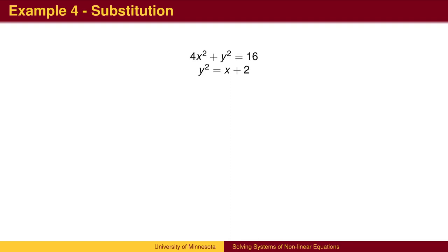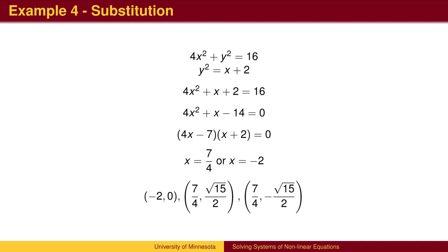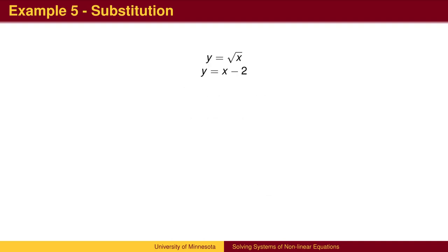Sometimes, we can substitute for something more complicated than a single variable. Here, we can solve for y squared and substitute. Plugging x plus 2 into the first equation gives an equation in x. Get one side equal to zero. Factor. Solve for x. Then find the possible y values.